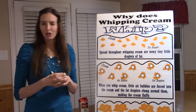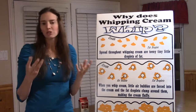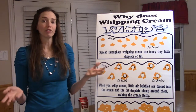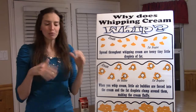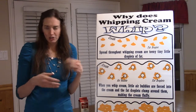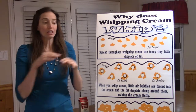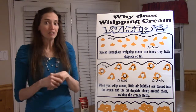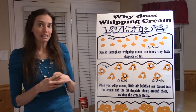Have you ever made cookies or cake with your mom? You know when you start out, you start with eggs and oil and sugar and flour, and you mix them all together. After you're done mixing, you don't see pieces of egg anymore — you don't see pieces of flour or pieces of sugar. It's all mixed together in the batter and you can't see individual pieces. Well, whipping cream is actually like that.